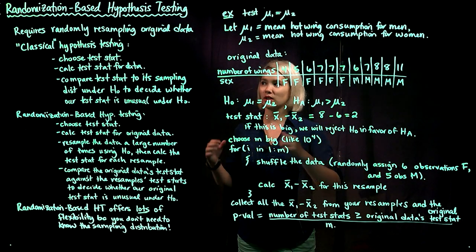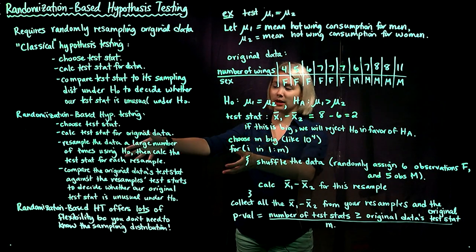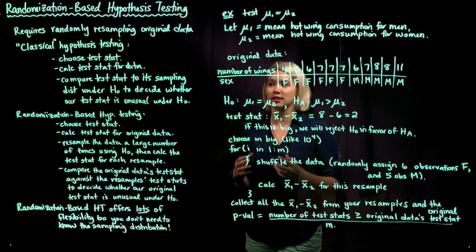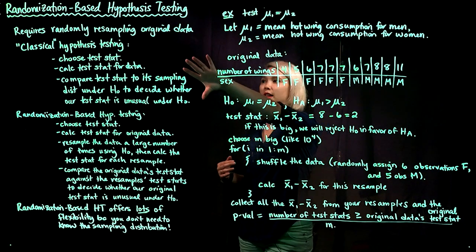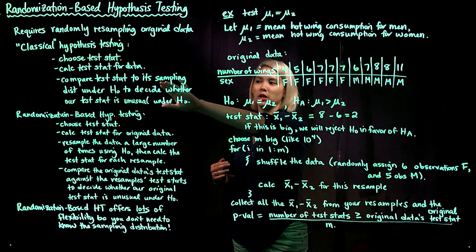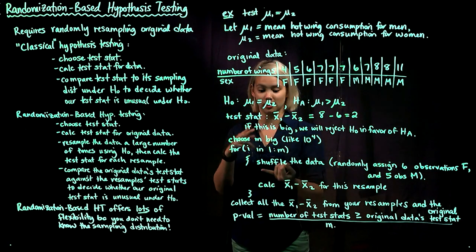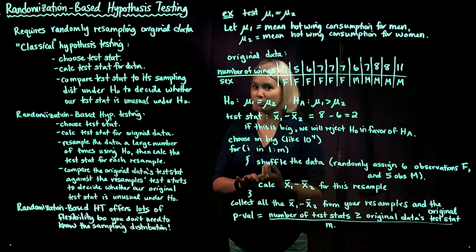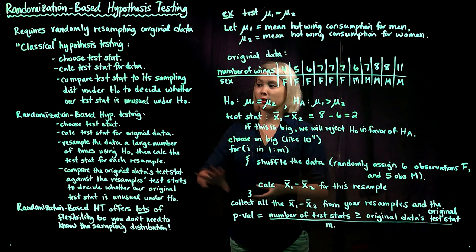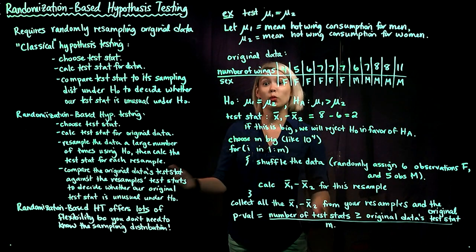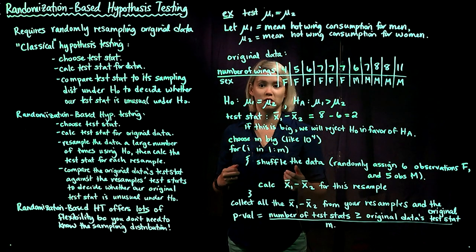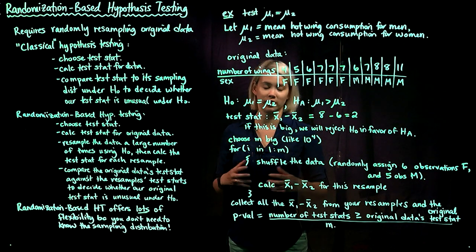Randomization-based hypothesis testing is pretty similar. The main difference is the sampling distribution. In classical hypothesis testing, we assume we know the sampling distribution — sometimes it's a normal distribution or a t-distribution. In randomization-based hypothesis testing, we use computing to create our sampling distribution under the null hypothesis.